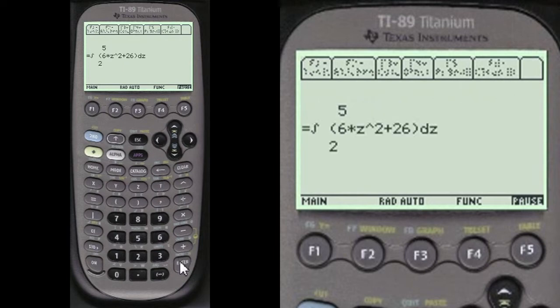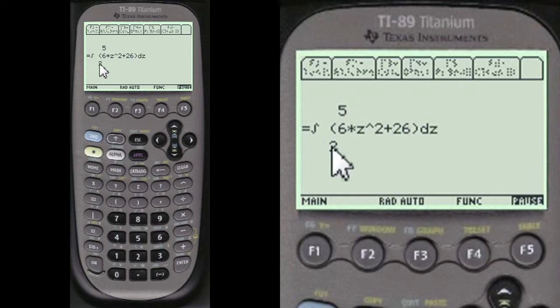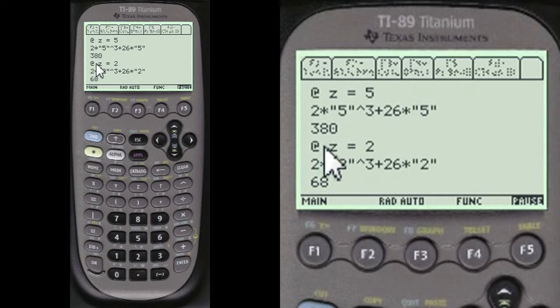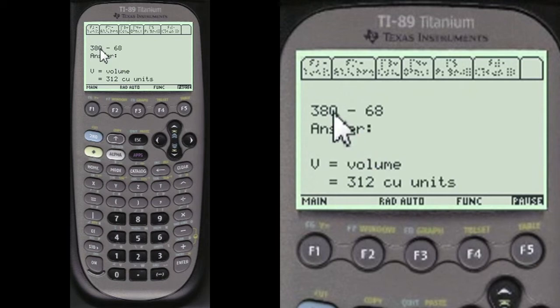Now we're going to integrate that dz with respect to z and over 5 and 2. Here's the integral of that. And now the limits at z equals 5. Here they are. Here's the answer. 380. And z equals 2. Here's the answer. 68. Now upper minus lower. Answer is 312 cubic units.